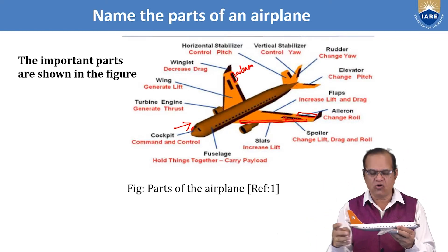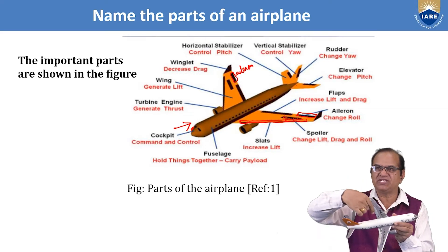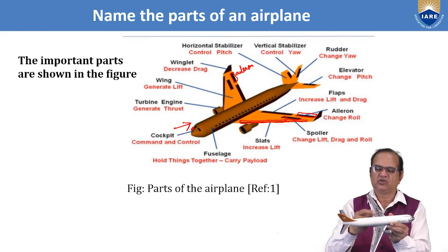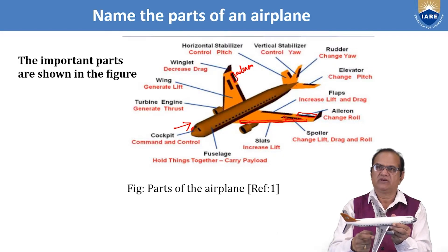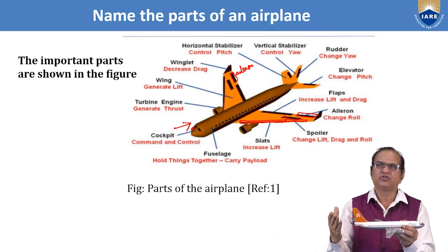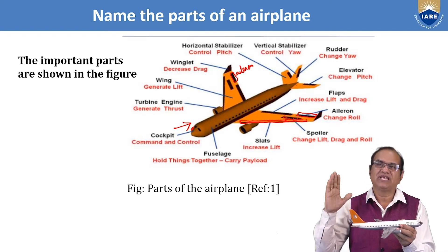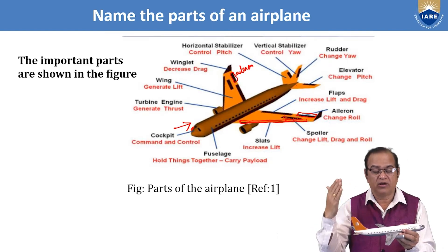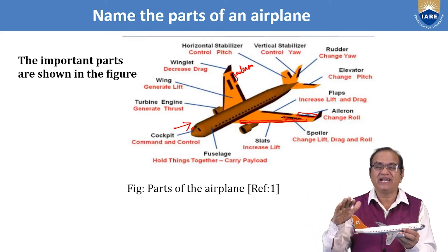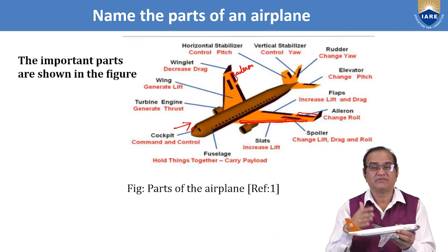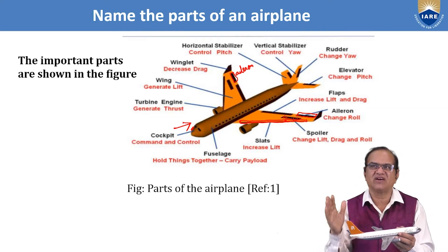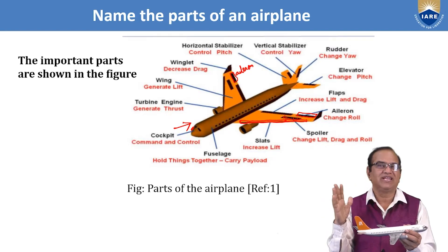The flap is near the root of the wing on the trailing side, on both sides. The flaps are used to increase lift and drag. During landing we want more lift as well as drag, so the angle of attack of the flaps will be high. During takeoff we want more lift but not more drag, so the deflection angle of the flaps will be lesser than during landing.